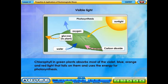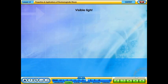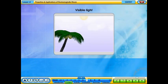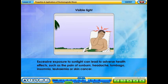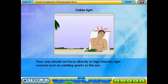Chlorophyll in green plants absorbs most of the violet, blue, orange, and red light that falls on them and uses the energy for photosynthesis. Excessive exposure to sunlight can lead to adverse health effects such as sunburn, headache, lumbago, insomnia, leukemia, or skin cancer. One should not focus directly at high intensity light sources such as welding sparks or the sun.